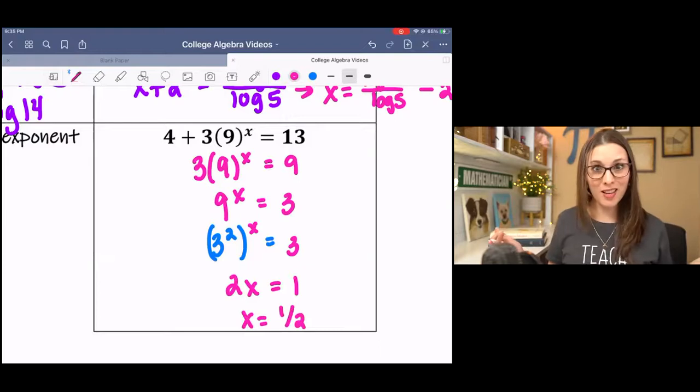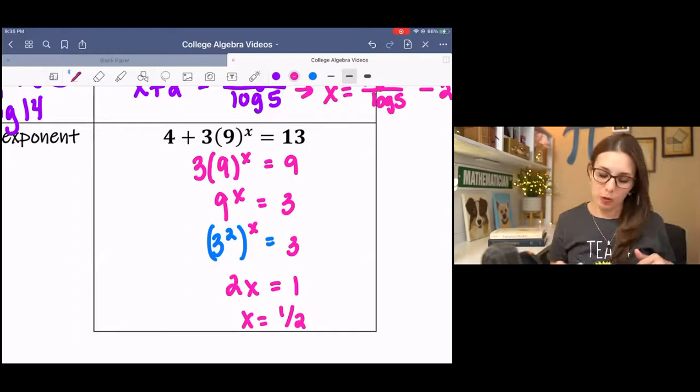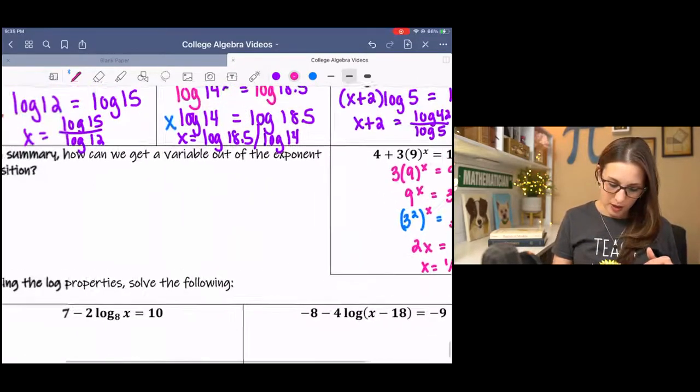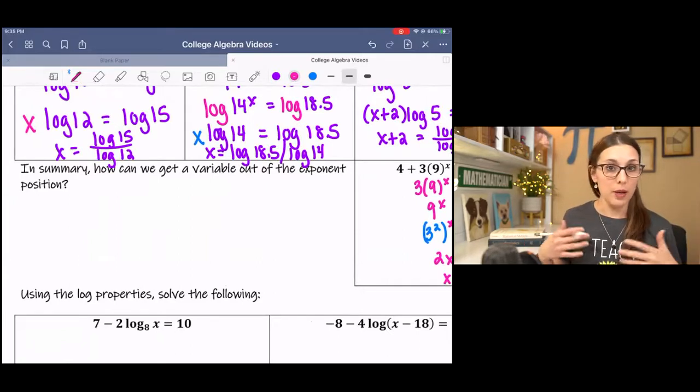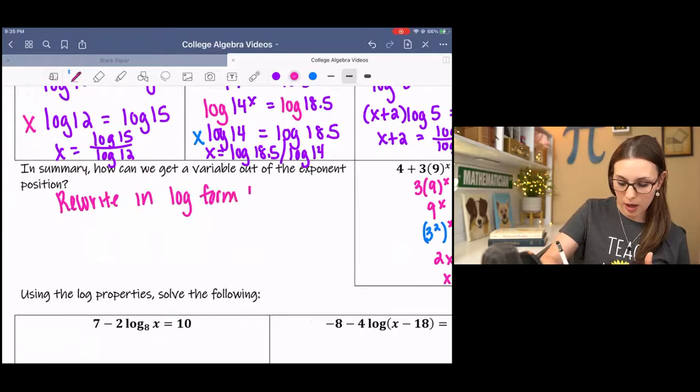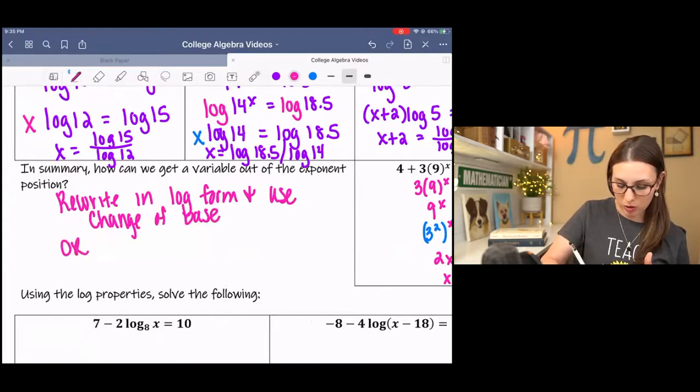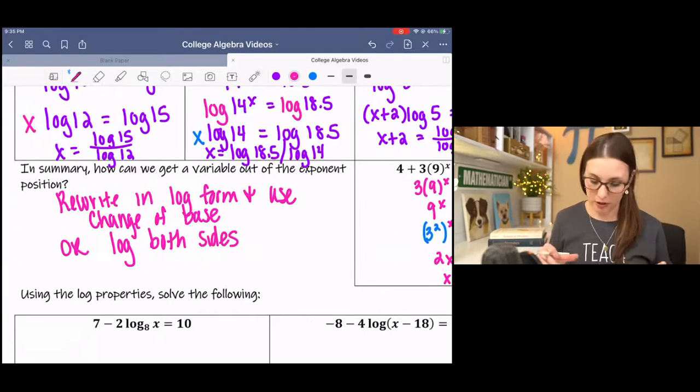Look at that. Wasn't that so easy? So you should have gotten 1 half in either case. Super simple. In summary, how can we get a variable out of the exponent position? Basically, we can rewrite in log form and use change of base formula or log both sides, which is my personal favorite. It's how I was taught it, so I always kind of default to that.